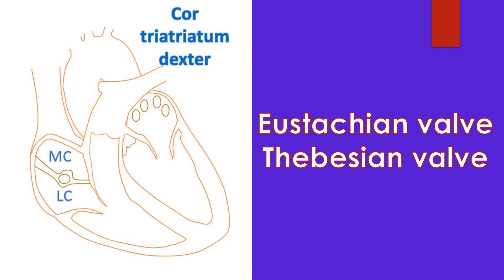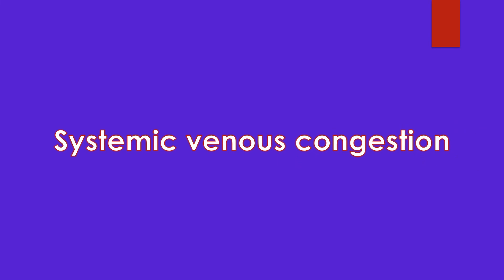In cor triatriatum dexter, the right atrium is divided into two chambers, possibly by the persistent sinus venosus valve. This is a combination of the fetal Eustachian valve, which guards the inferior vena cava orifice, and the Thebesian valve, which guards the coronary sinus ostium. In fetal life, the Eustachian valve is meant for directing oxygenated blood coming from the umbilical vein through the inferior vena cava to the left atrium across the foramen ovale. A non-obstructive septum is often an incidental finding, while an obstructive partition can cause features of right heart failure with systemic venous congestion.